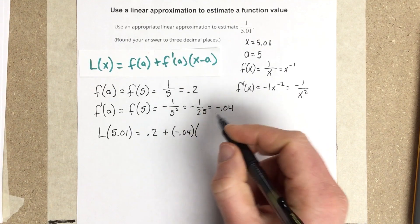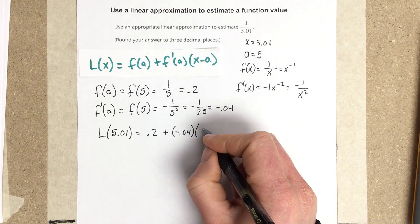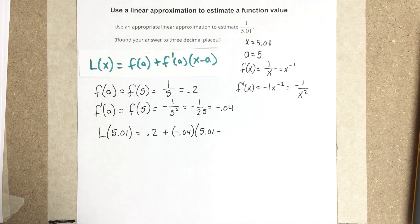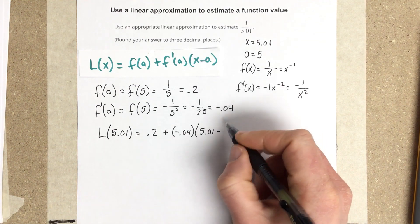And then I have x, which was 5.01, minus my a value, which my a value is 5.